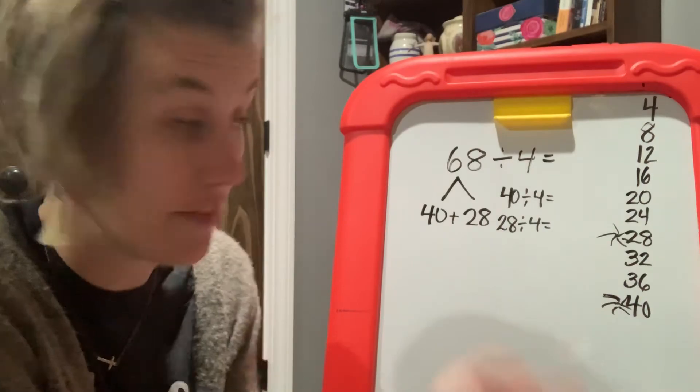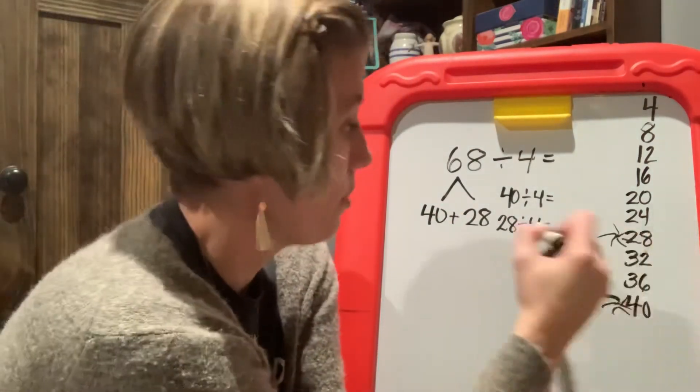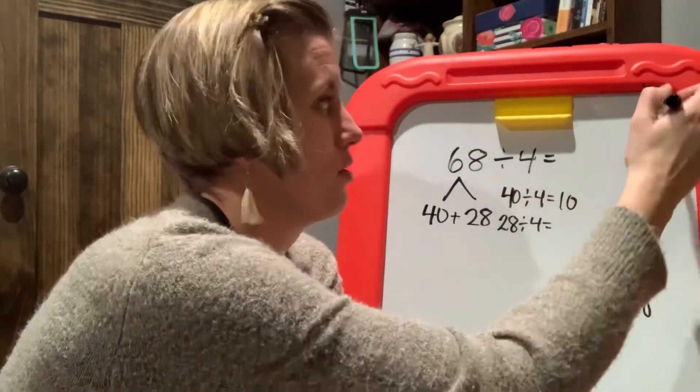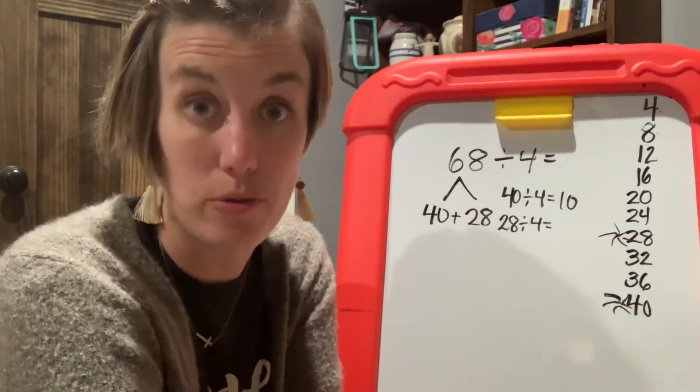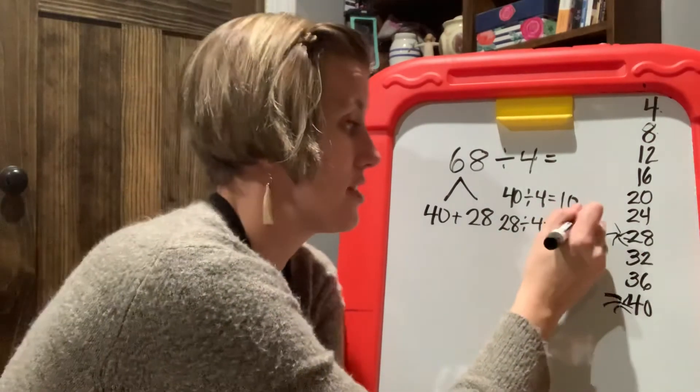So we turned this into two easier numbers to work with 40 and 28, which gave us two new division problems. And as luck would have it, we hit two different numbers here. So we hit 40 and that's 10. 1, 2, 3, 4, 5, 6, 7, 8, 9, 10, 40 divided by four is 10. And we hit 28 and 28 divided by four is seven.